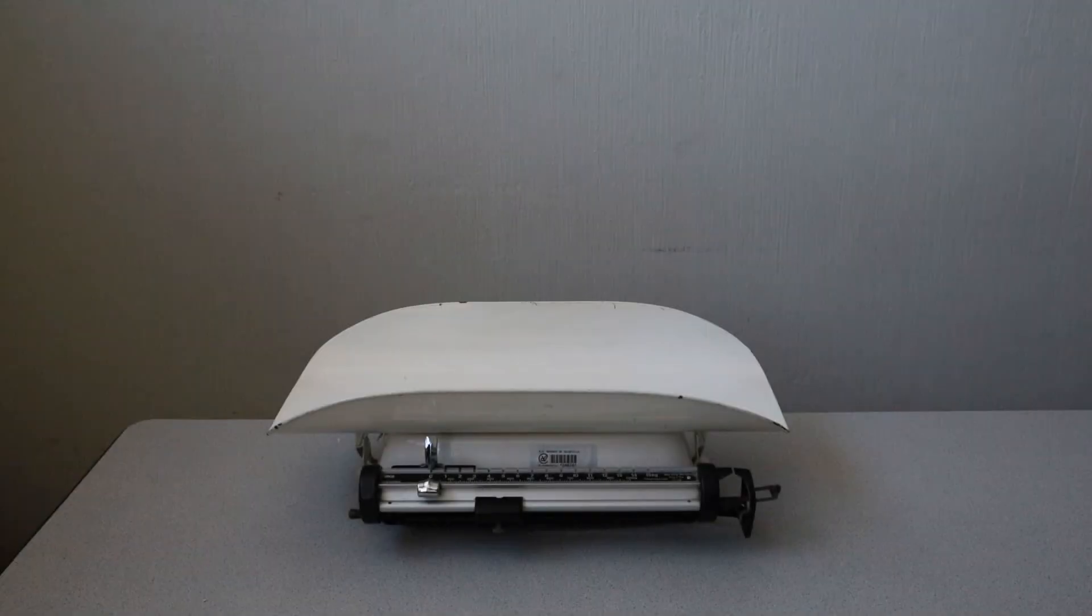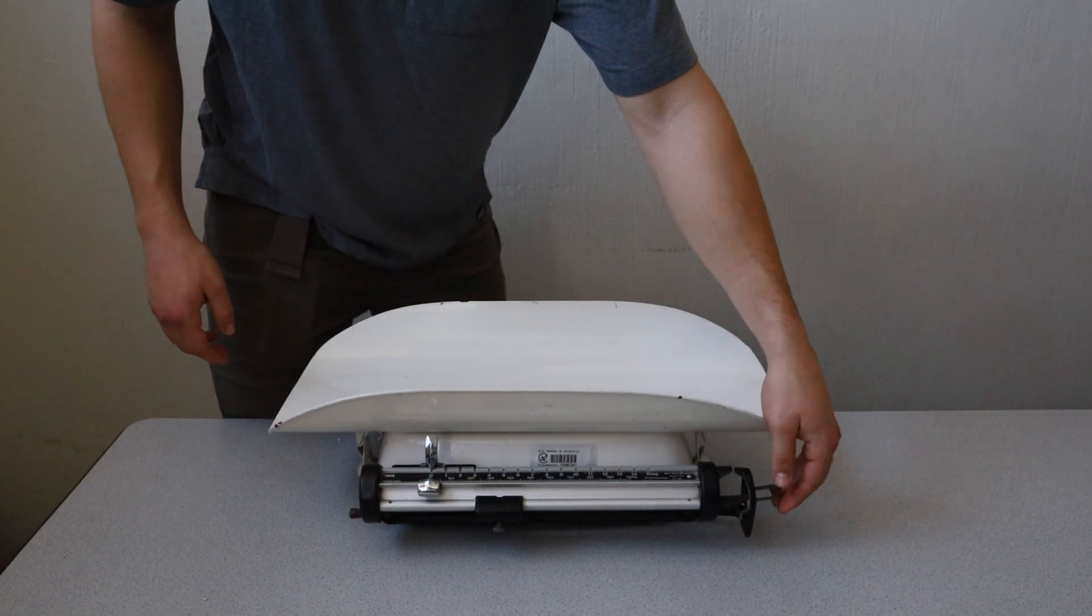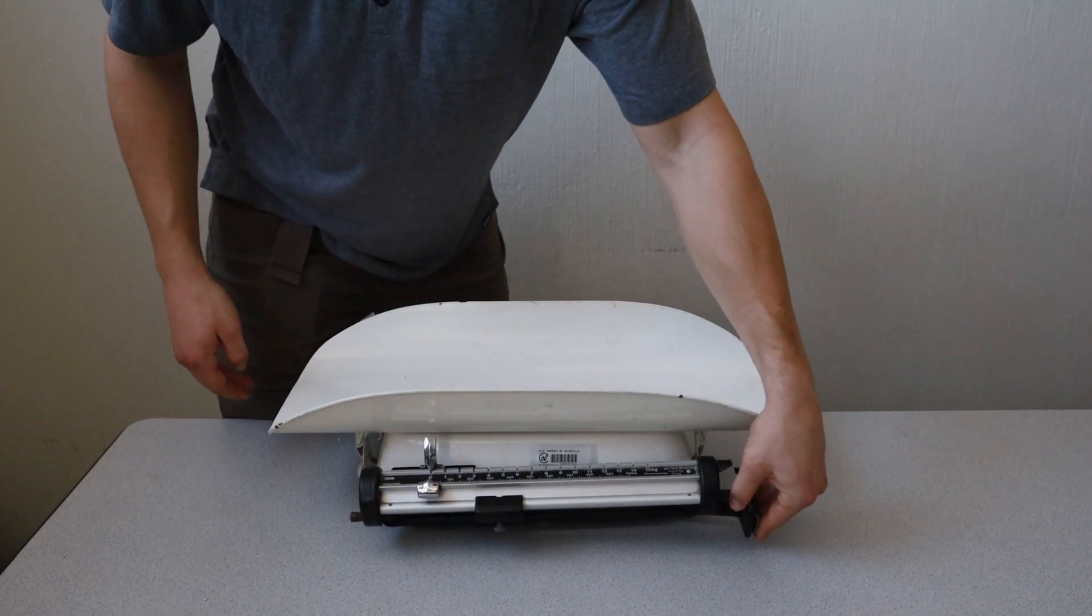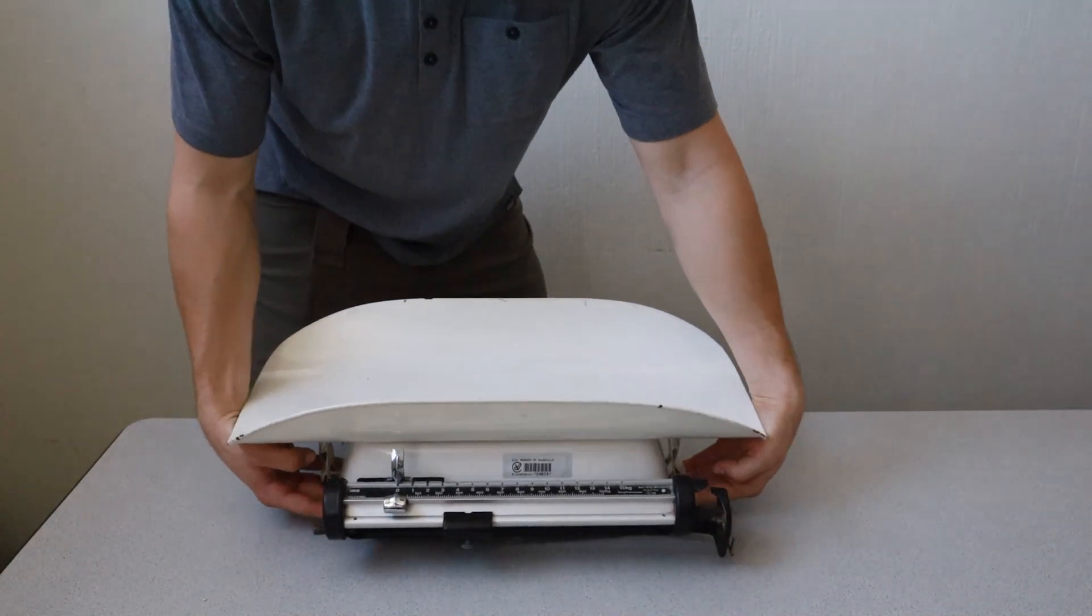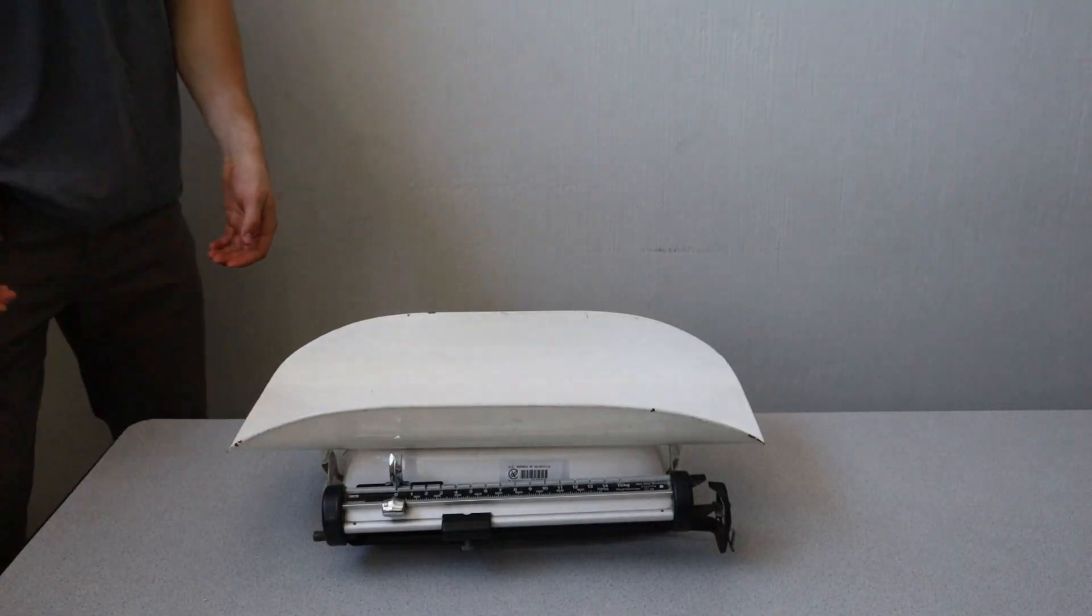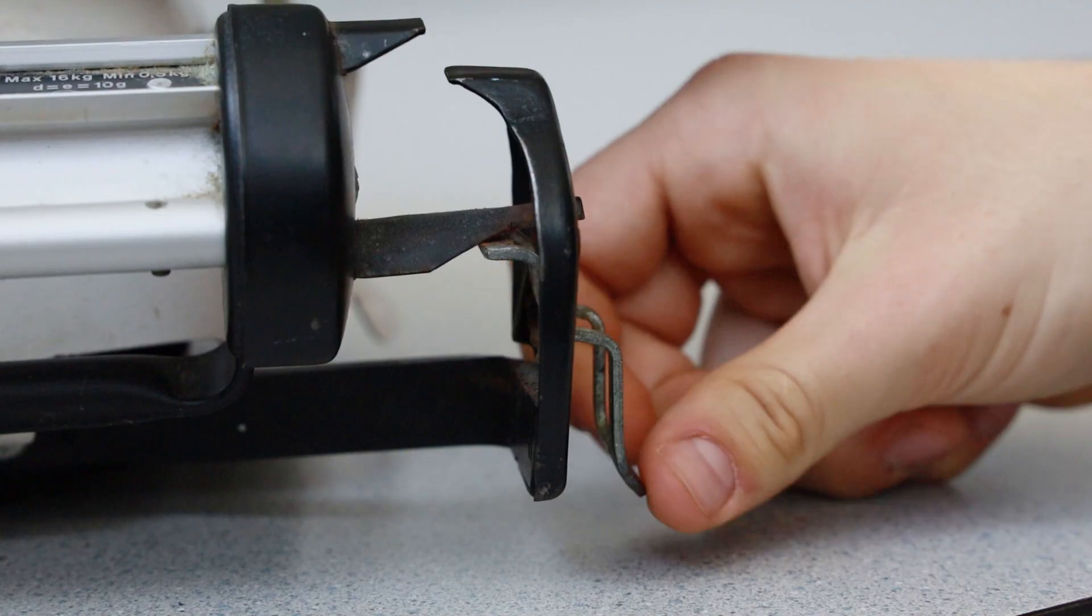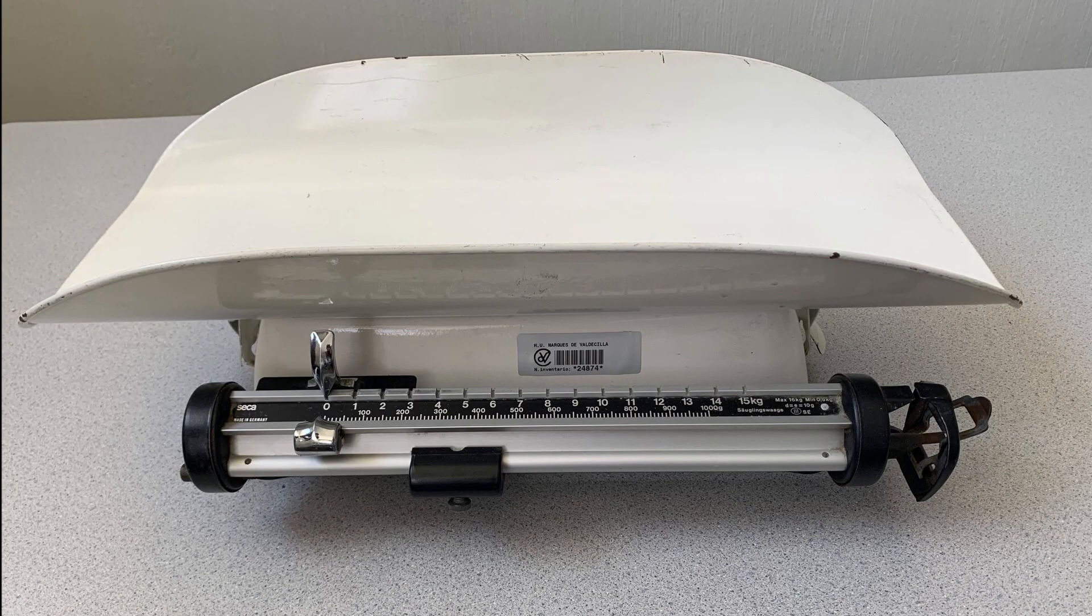It is recommended to clean the scale with a sanitary wipe prior to transport and prior to each use. Lift the scale from beneath with two hands and transport to the desired location, ensuring that the scale is set back on a level surface free of external obstructions. Unlock the transport locks and remove the rubber band securing the weights to begin using the scale again. Calibration may be required prior to using the scale in the new location.